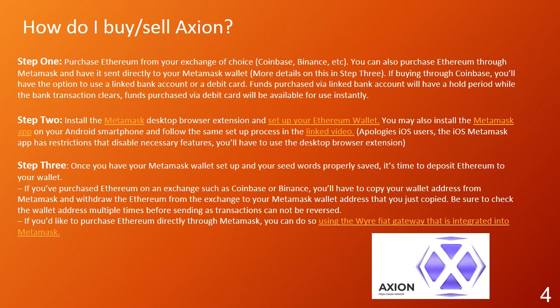How do I buy or sell Axion? Step 1: Purchase Ethereum from your exchange of choice — Coinbase, Binance, etc. You can also purchase Ethereum through Metamask and have it sent directly to your Metamask wallet. If buying through Coinbase, you'll have the option to use a linked bank account or a debit card. Funds purchased via linked bank account will have a hold period while the bank transaction clears.